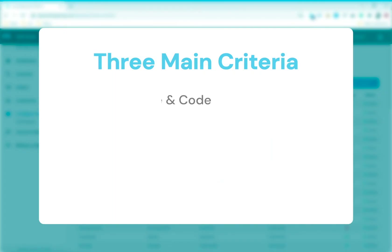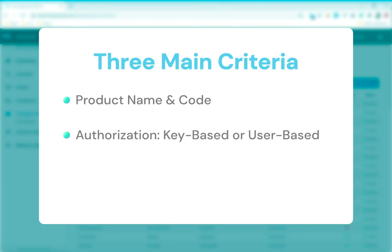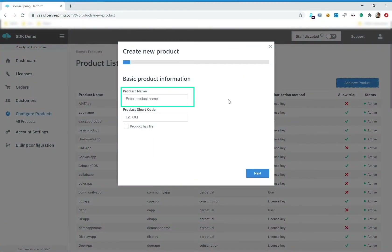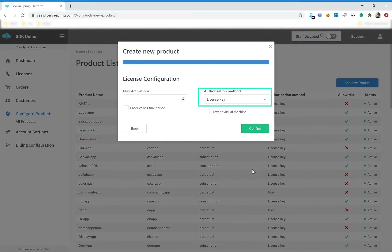You will be defining three main criteria: one, the product app name and its code; two, the authorization method, whether it's going to be a key-based or user-based license; and three, the default license type. The product name, the product code, and the authorization method cannot be changed later.